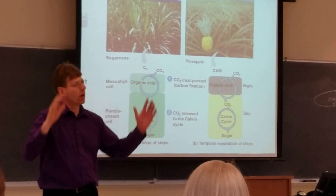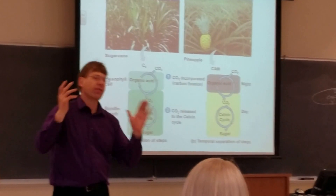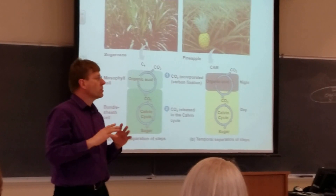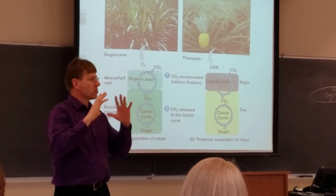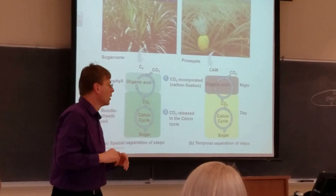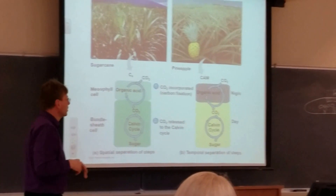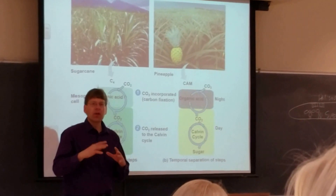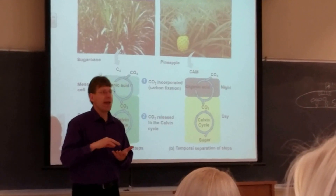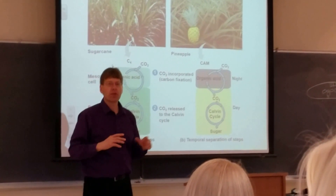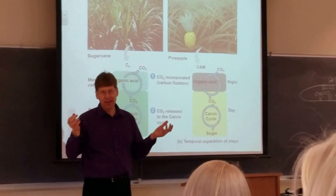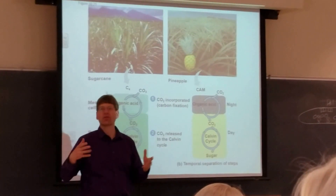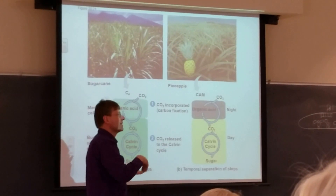Plant cells have a cell wall, a nucleus, mitochondria and chloroplasts, and also a vacuole, which is a place to store stuff. Human cells don't have vacuoles. In CAM plants, this vacuole is really big. The reason CAM plants are succulent is because they've got these really big vacuoles that are storing a lot of organic acids at night.